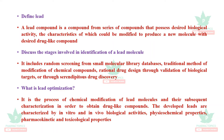Lead identification methods include chemical databases, traditional methods, natural compounds, and rational drug design. These are all the identification methods, leading into lead optimization.